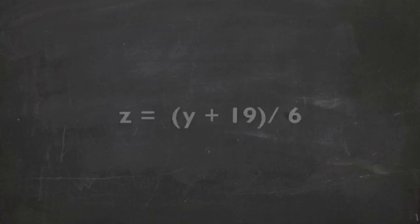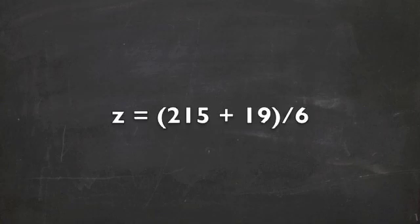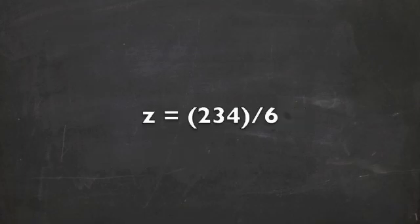We can also solve for z now, giving us y plus 19 over 6, which is 215 plus 19 over 6. This is 234 over 6, equaling 39, the number of three points.